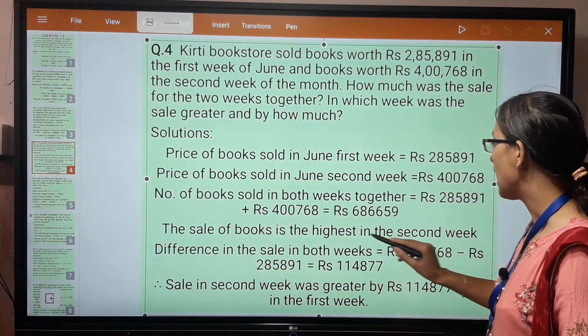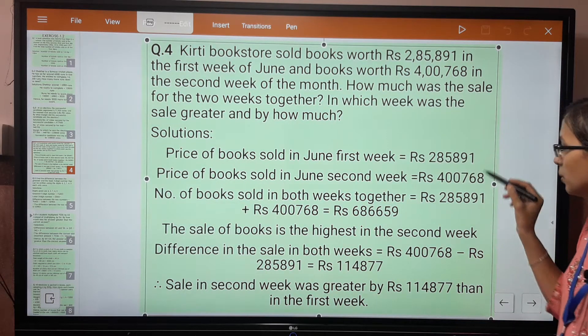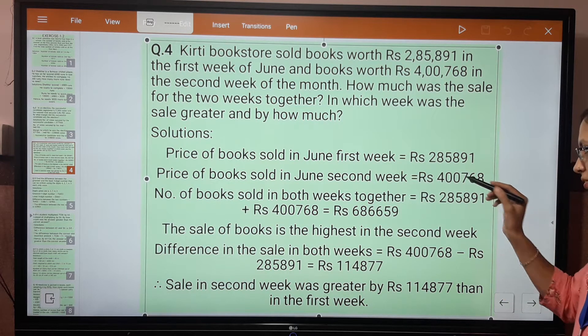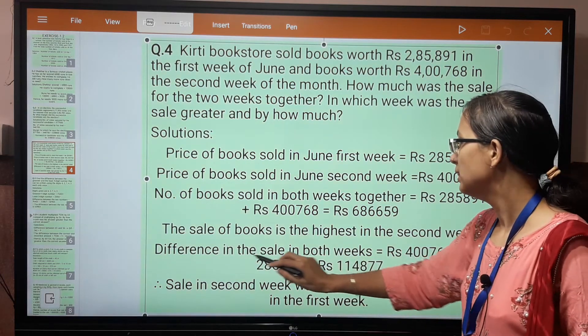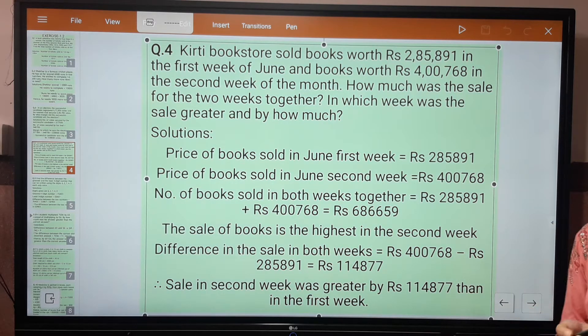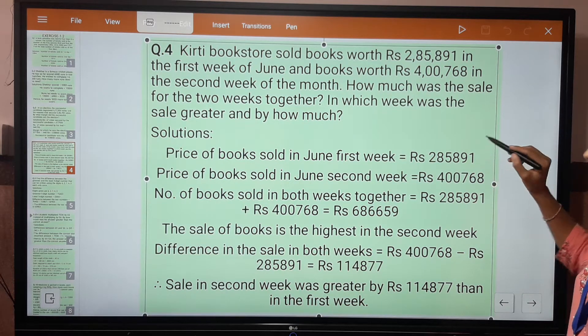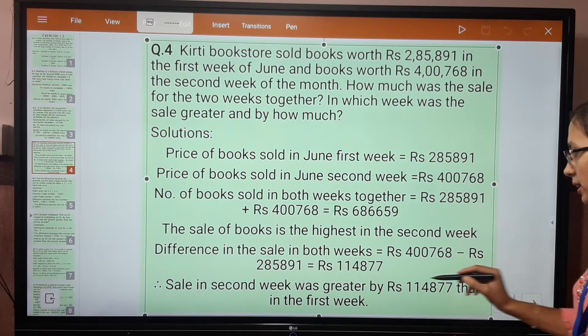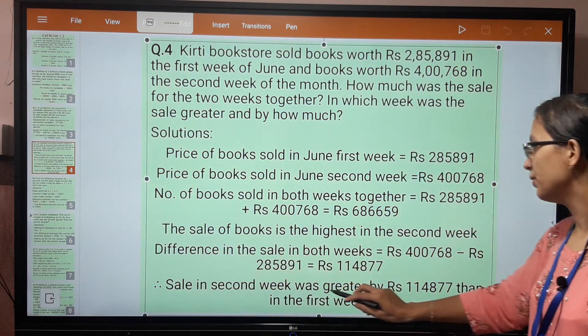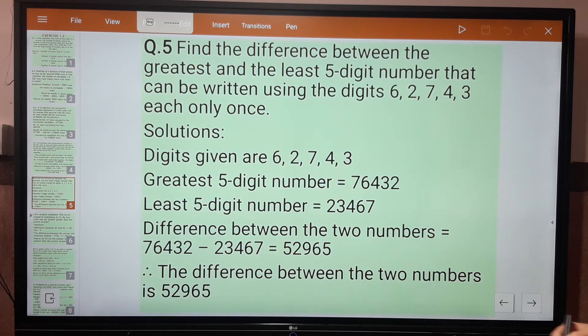The sale of books is the highest in the second week. You can verify this by looking at the numbers - first week is over 2 lakh, and second week is over 4 lakh. So which week had higher earnings? Second week. The difference in sales in both weeks - to find difference, we do subtraction. We subtract first week's earnings from second week's earnings. The answer is 1,14,877. Hence, sale in the second week was greater by 1,14,877.